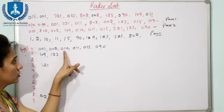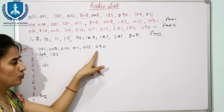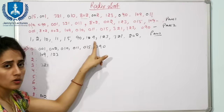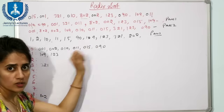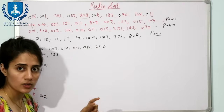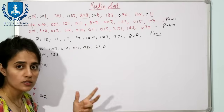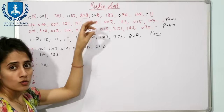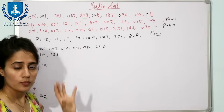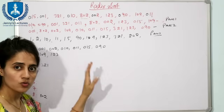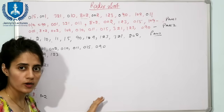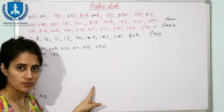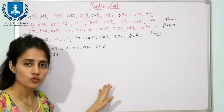We remove the extra zeros we added to make the numbers three-digit. This is now the sorted data. How many passes were required? Three — equal to the number of digits in the maximum number. Three digits means three passes are required. This is how Radix Sort sorts the data.